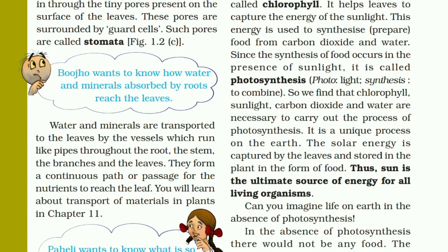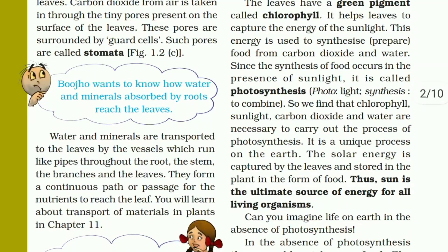Leaves have a green pigment called chlorophyll. That green color in leaves — that pigment is known as chlorophyll. It helps leaves to capture the energy of sunlight. So the leaves capture sunlight energy and use that energy to make food.